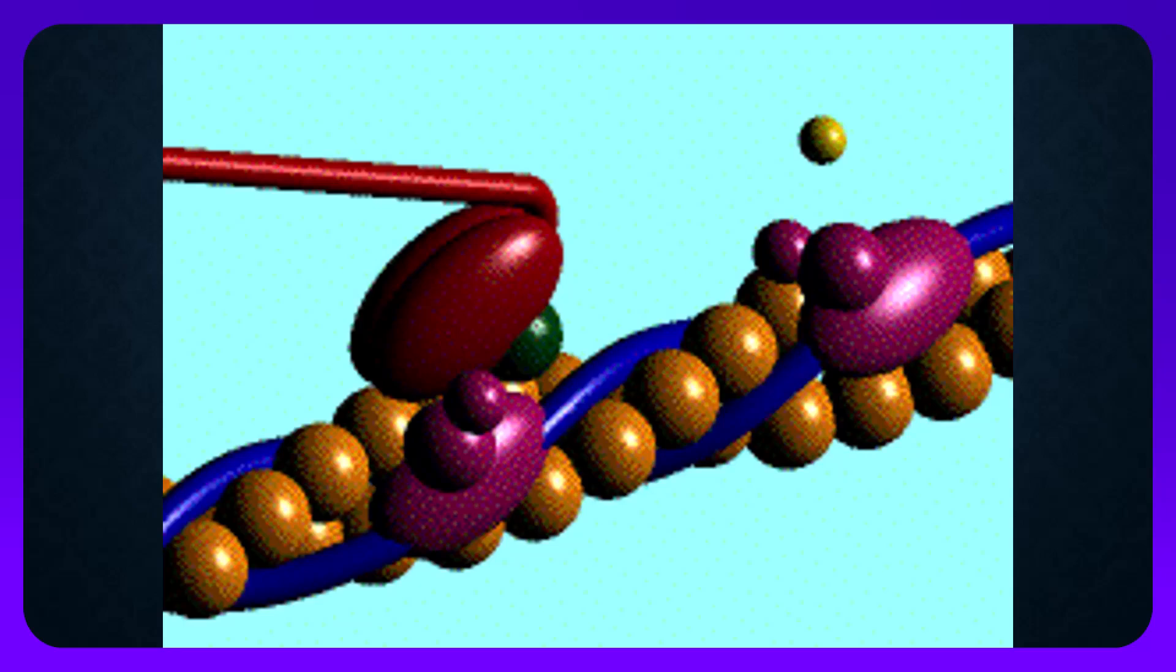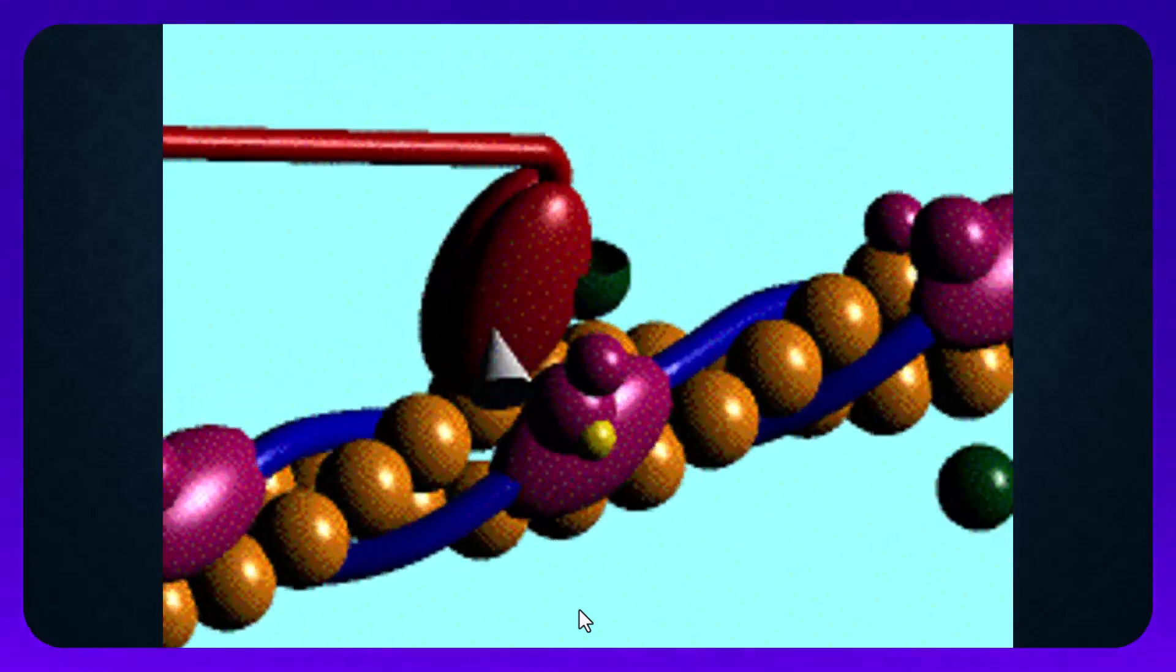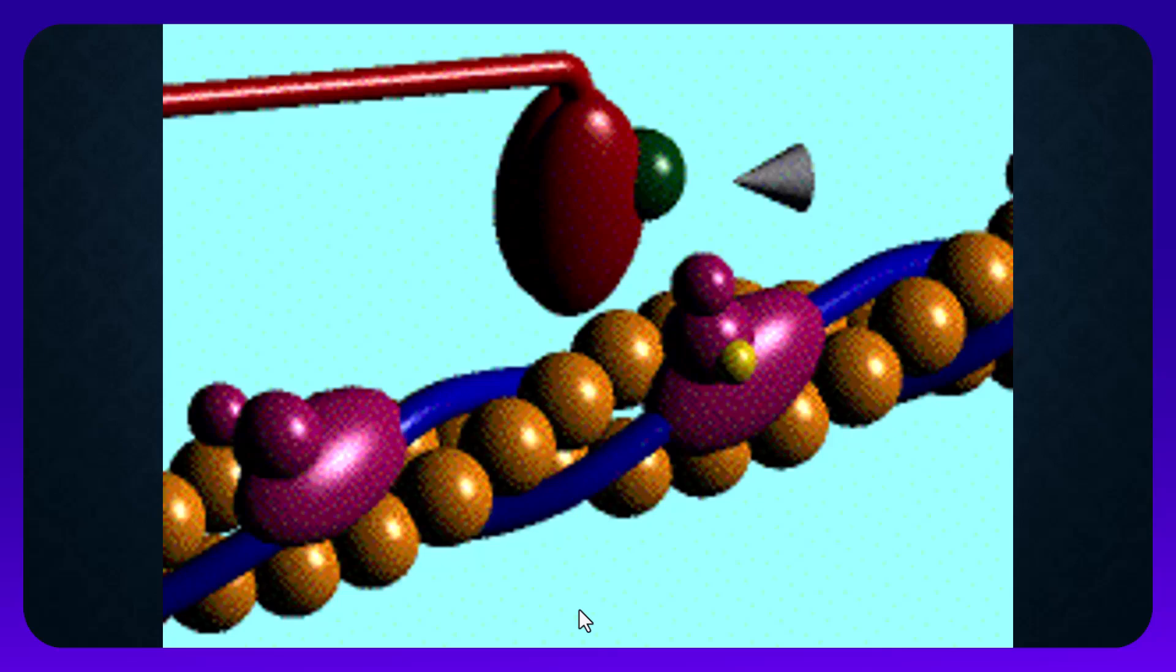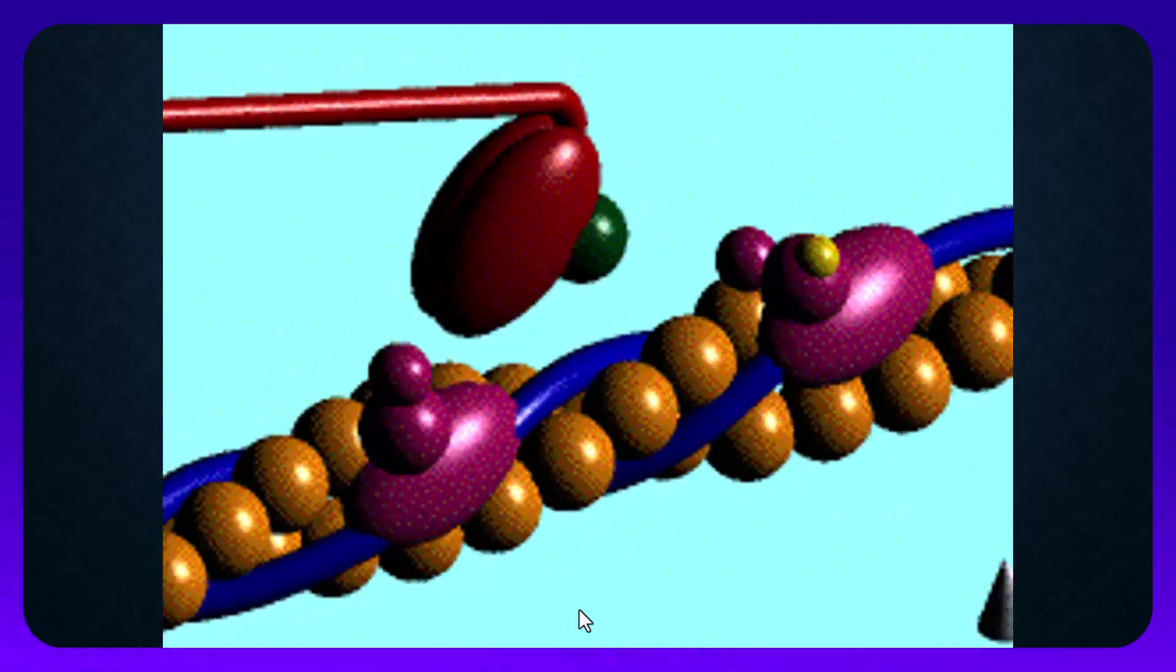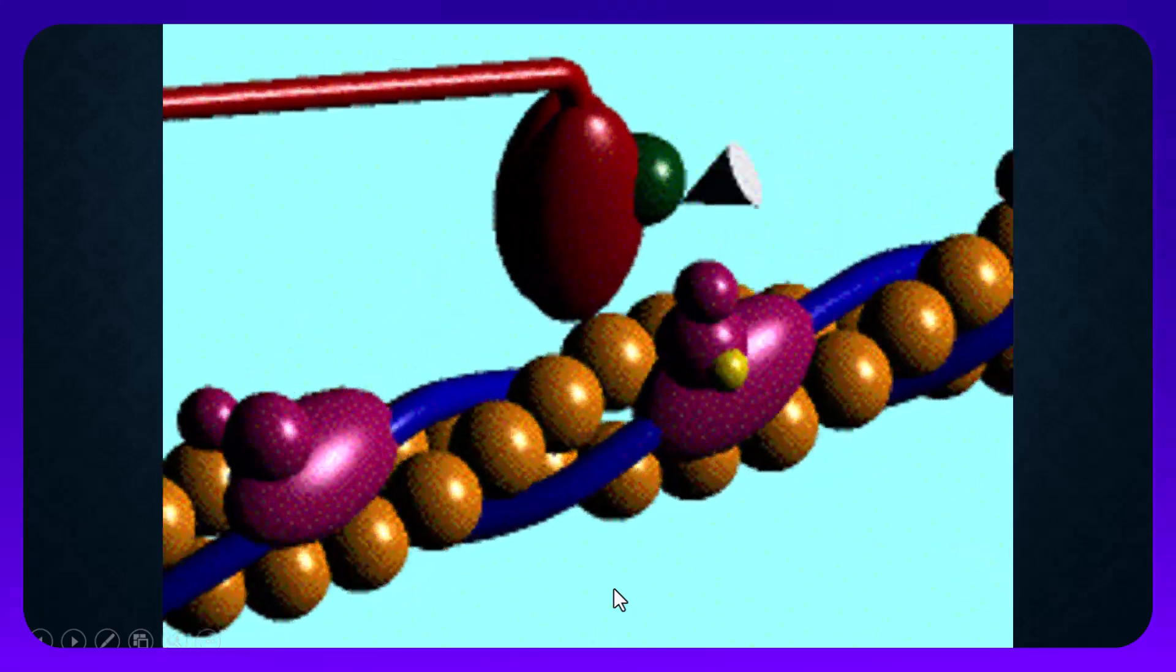Here you can see that the ATP attached to the head of actin and it is cleaved into ADP and phosphate. This causes attachment of the head with the myosin element. On the other hand,